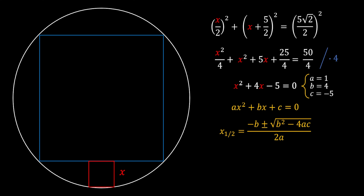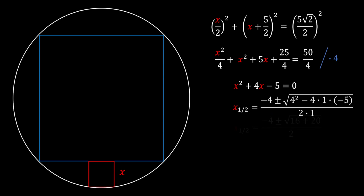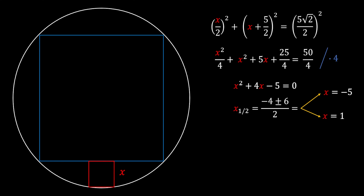Substituting into the quadratic formula and simplifying inside the square root — since √36 = 6 — we get two possible solutions. The first is (−4 − 6)/2 = −10/2, so x = −5. The second is (−4 + 6)/2 = 2/2, so x = 1.